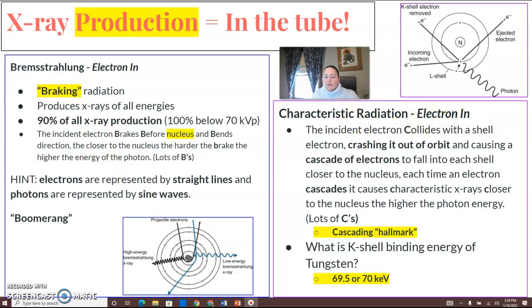Characteristic is also an electron in. It deals with an incident electron that collides with a shell electron, unlike bremsstrahlung, which is near the nucleus. Try to separate those out.